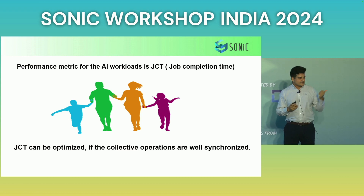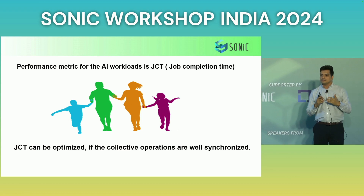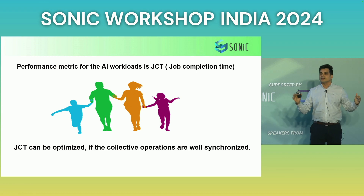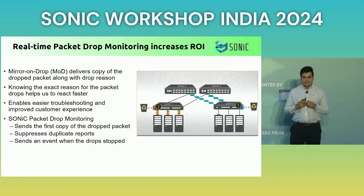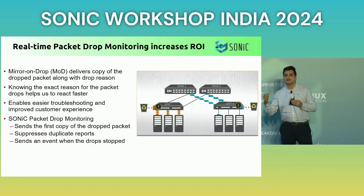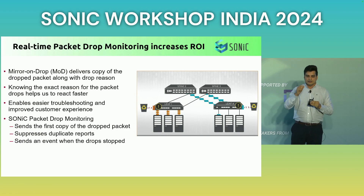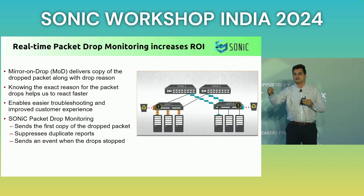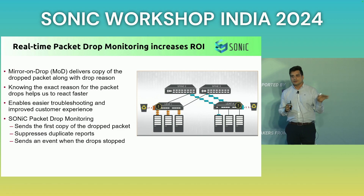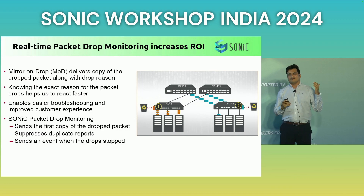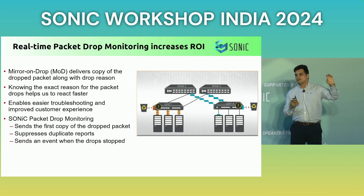For an AIML workload, one guy finishing the race doesn't help - all of them have to finish. We have done some optimizations: we don't send every packet which is being dropped. We sense flows, and only the first packet of the flow is sent to the collector, while the other packets are suppressed. This optimization means you don't have a lot of false alerts - you only have what you need and can focus on what is needed.